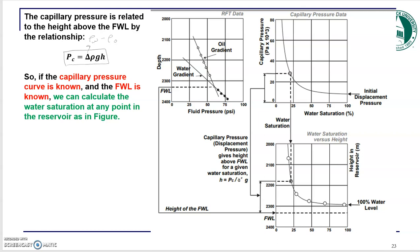We'll talk about how to convert this capillary pressure data from the laboratory into the field scale. In the lab experiment, you saturate your sample 100% with water, then inject air into the core sample, measure saturation at different pressures, and plot displacement pressure as a function of water saturation. Then somehow — which we'll discuss in the next slide — you convert that capillary pressure data from lab scale to field scale.